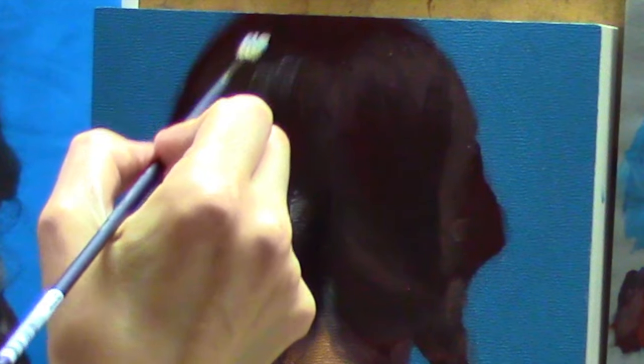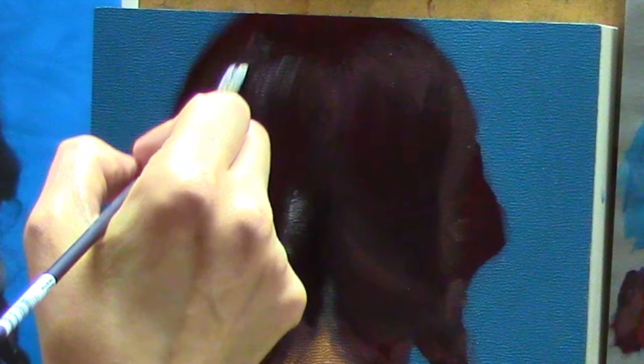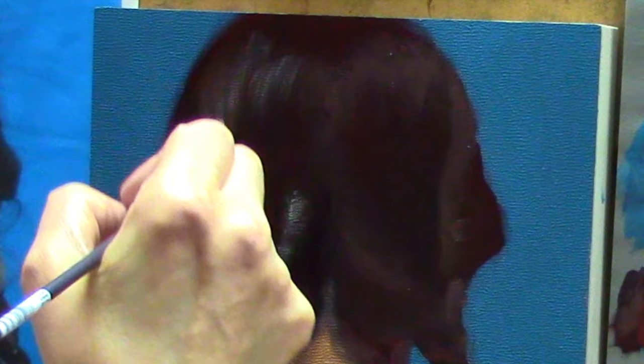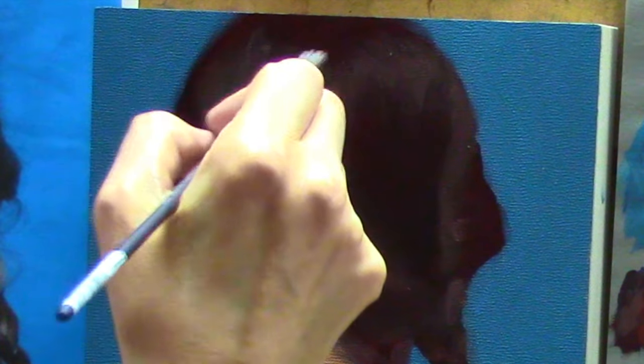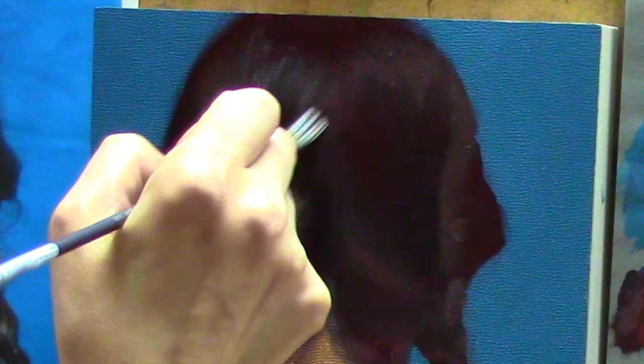If I go in with just a number two round brush and try and make each individual stroke, it looks a little bit fake. The paint doesn't go on quite the same way. But using this technique and using the texture of the brush to create the texture of the hair, it looks softer, it looks more natural and it looks more random.